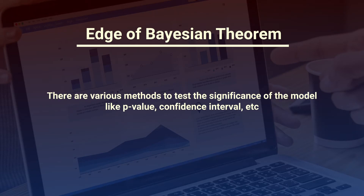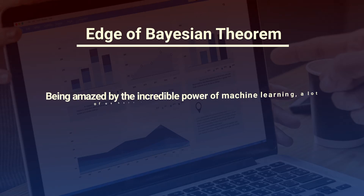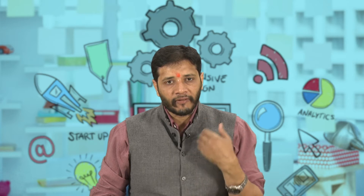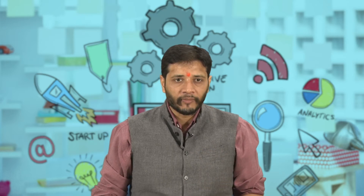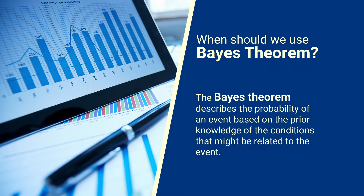There are various methods to test the significance of a model, like p-value, confidence interval, and others. Bayesian statistics continues to remain incomprehensible to many analysts. Being amazed by the incredible power of machine learning, a lot of us have become unfaithful to statistics, which has given rise to Bayes' theorem. When should we use Bayes' theorem? Bayes' theorem describes the probability of an event based on prior knowledge of conditions that might be related to the event.